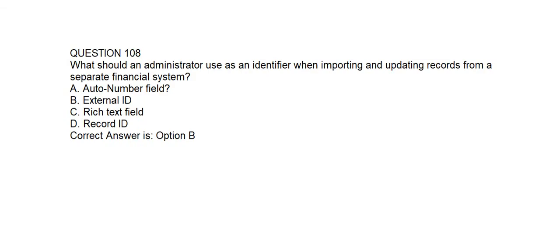Question number one hundred and eight. What should an administrator use as an identifier when importing and updating records from a separate financial system? Option A: Auto Number Field. Option B: External ID. Option C: Rich Text Field. Option D: Record ID. Correct answer is Option B: External ID.